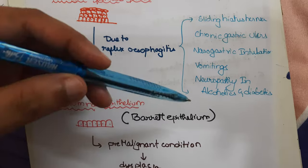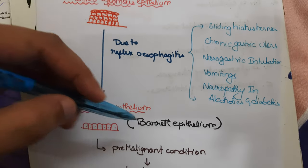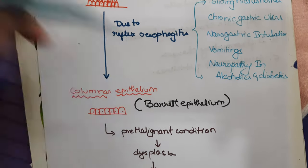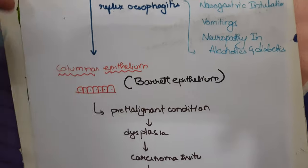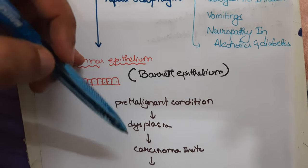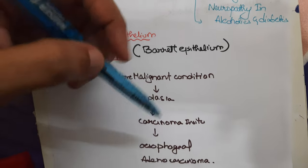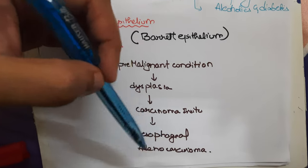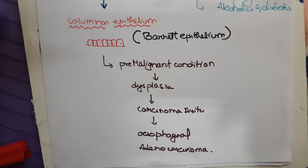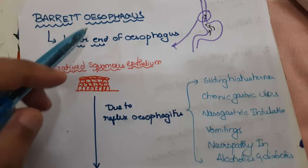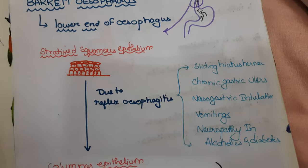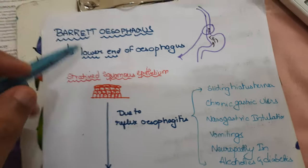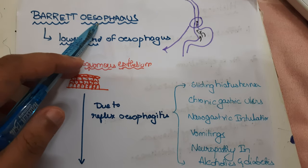This columnar epithelium in the esophagus is called Barrett's epithelium. Barrett's epithelium is a pre-malignant condition — it can undergo dysplasia, and finally carcinoma in situ, causing esophageal adenocarcinoma. So Barrett's esophagus is a precancerous condition.